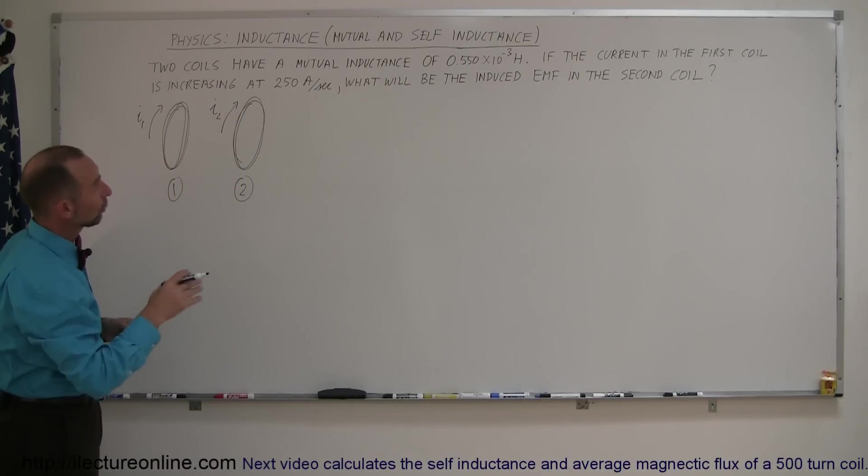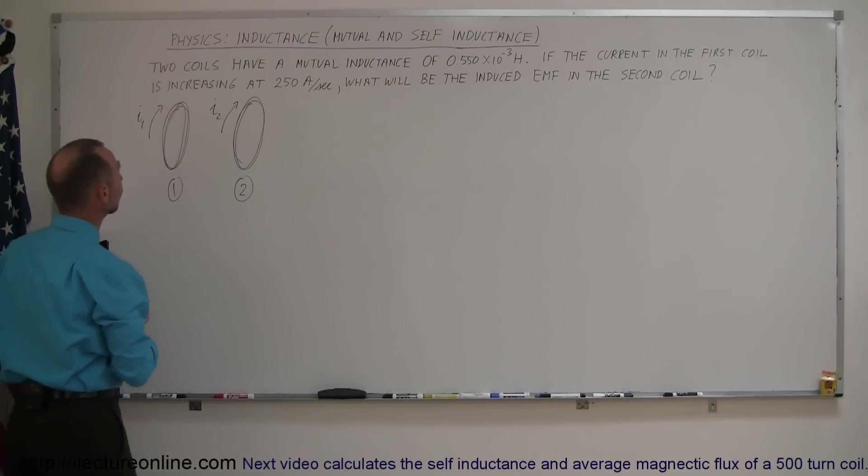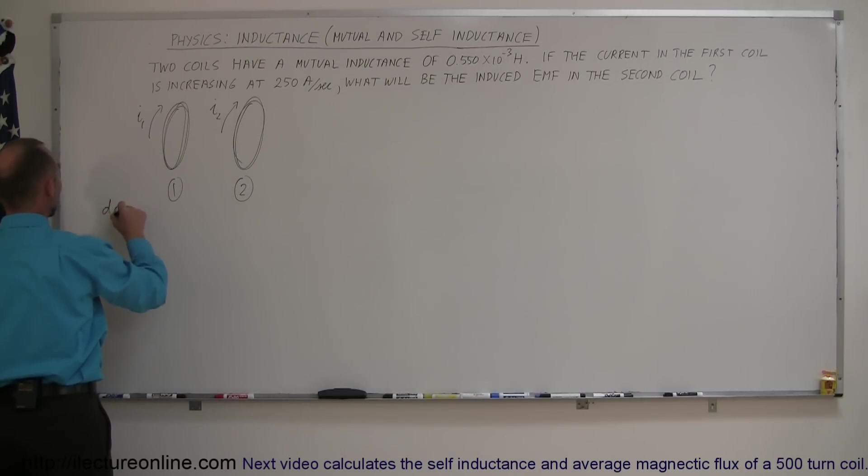And it says that the current in the first coil is increasing at 250 amps per second. So, the dI1/dt, the change in the current of the first coil per unit time, is equal to 250 amps per second.